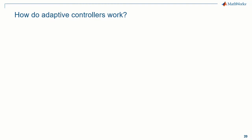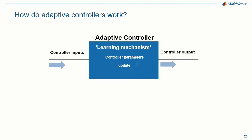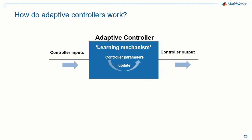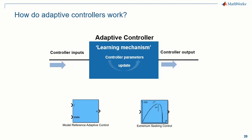For those not aware of how adaptive controllers work, these controllers have a learning mechanism that lets you update controller parameters throughout the operation of the system to account for variations in process dynamics. Simulink Control Design provides blocks to implement different types of adaptive controllers — for example, model reference adaptive controllers and extremum seeking controllers. Let's look at a scenario where an adaptive controller might be needed.